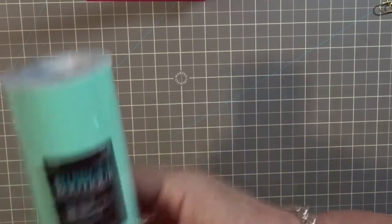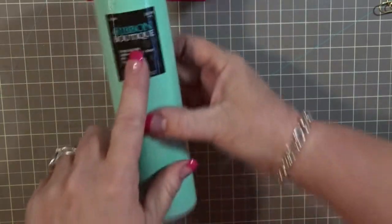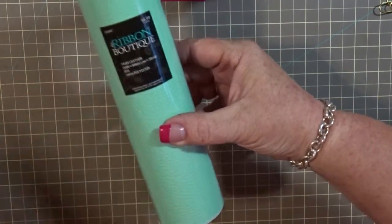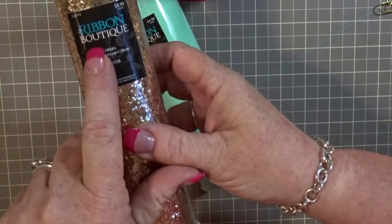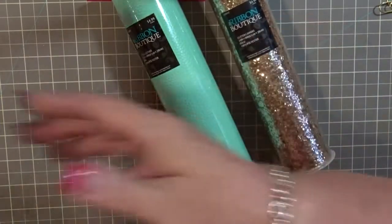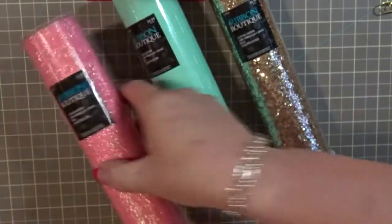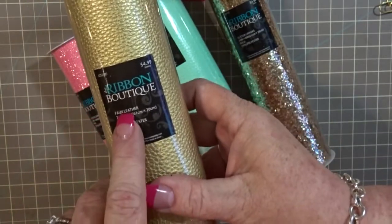And what I'm using is this. This is from Hobby Lobby, ribbon boutique. This one is faux leather. This one is glitter canvas. This is glitter canvas, can you see that, I think you can. And this is faux leather as well.